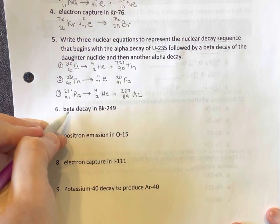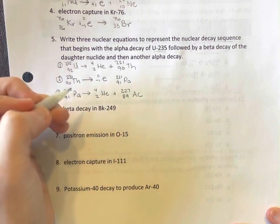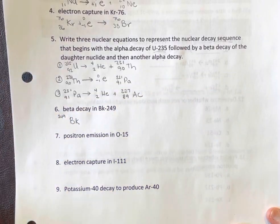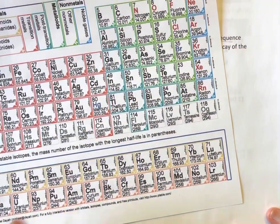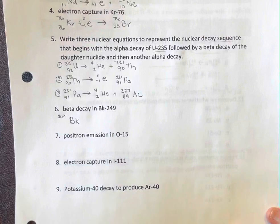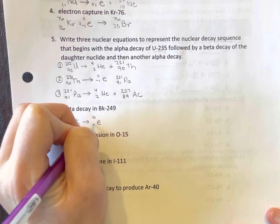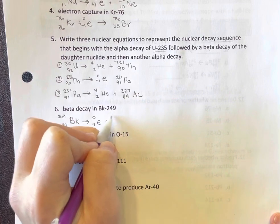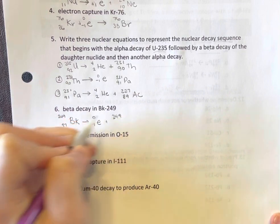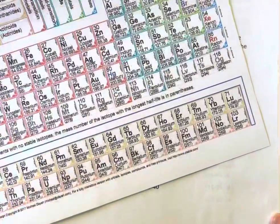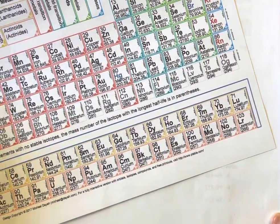All right. Beta decay. This is berkelium BK-249. So we're going to be dealing with elements here that we don't deal with a whole lot. Atomic number 97 undergoing beta decay. That's an electron. No change in mass number. Atomic number goes up by one. 98. Californium.